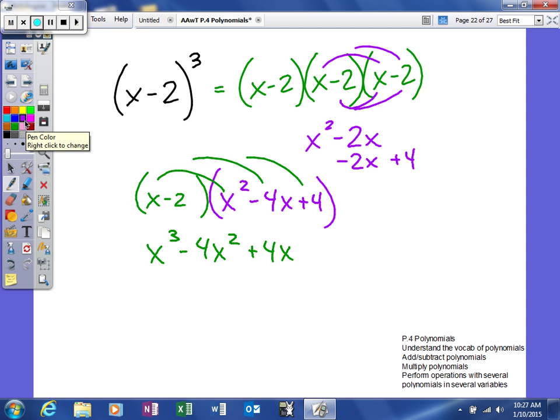That will give me negative 2X squared plus 8X, and then minus 8.